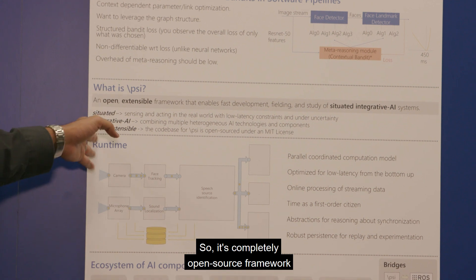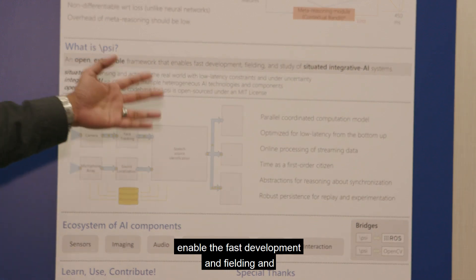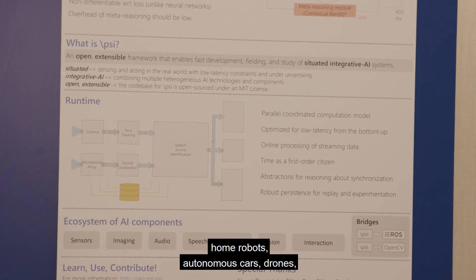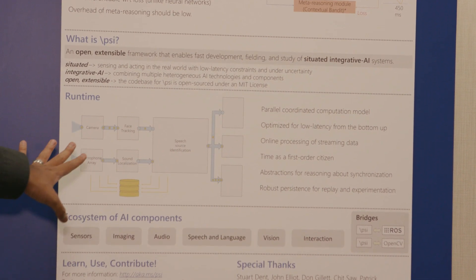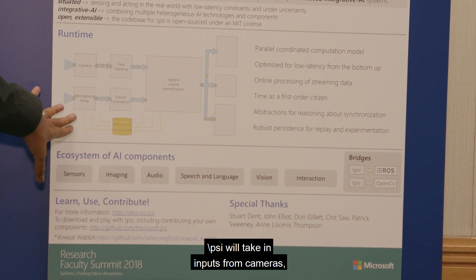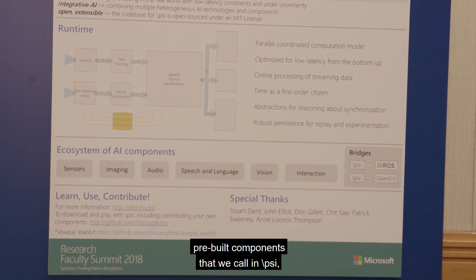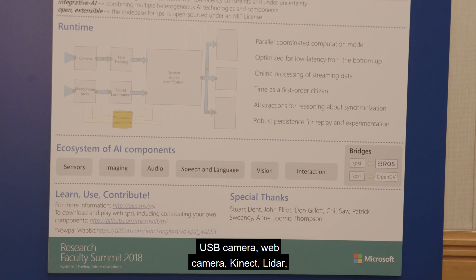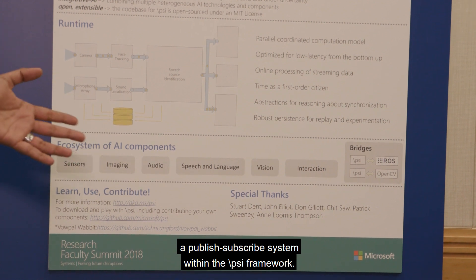What is PSI? It's a completely open source framework which allows you to enable the fast development and fielding and study of integrative AI systems like robots, home robots, autonomous cars, and drones. At the risk of oversimplifying, PSI will take in inputs from cameras, microphone arrays, or any other sensor that you have. We have a large array of pre-built components that are already designed to take in inputs from almost any camera — USB camera, web camera, Kinect, LiDAR — and make it available in a publish-subscribe system within the PSI framework.